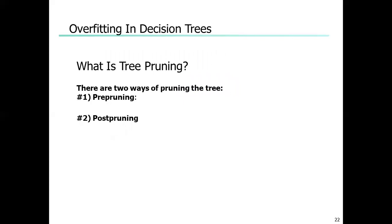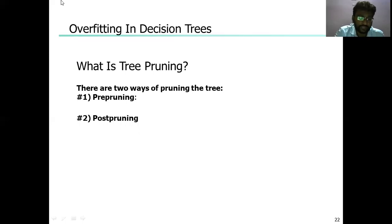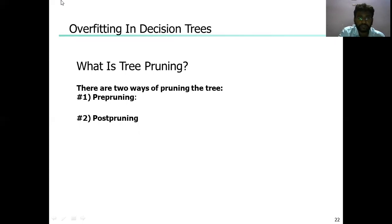The next topic is overfitting in decision trees. Overfitting happens when the decision tree tries to be as perfect as possible by increasing the depth of the tree, thereby reducing errors but producing very complex results. This leads to overfitting of the decision values. Overfitting reduces the predictive nature of the decision tree. To avoid overfitting of the tree, we apply pre-pruning and post-pruning.